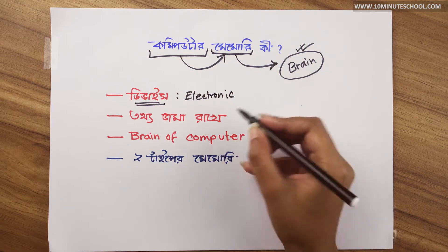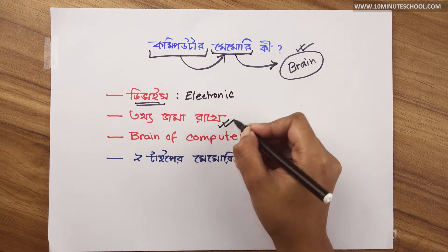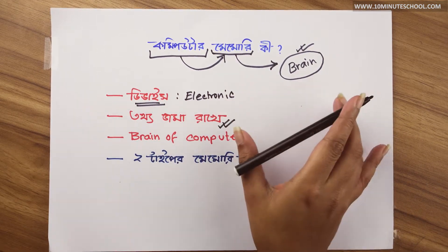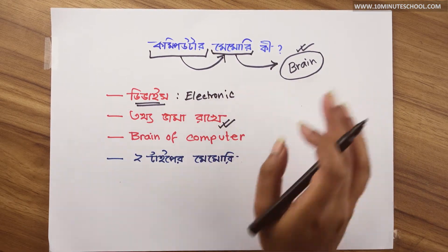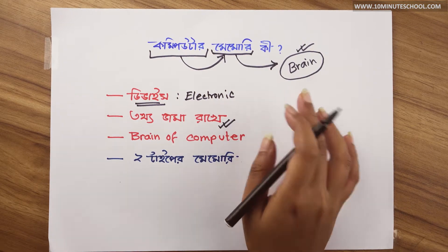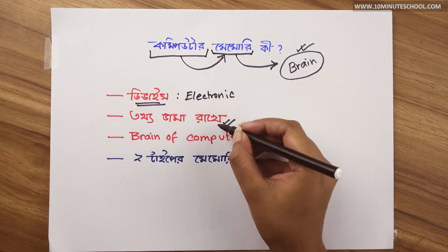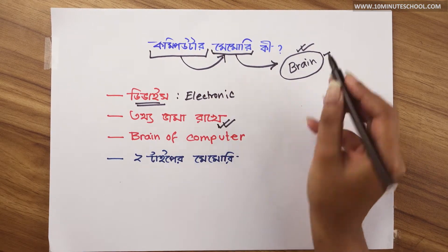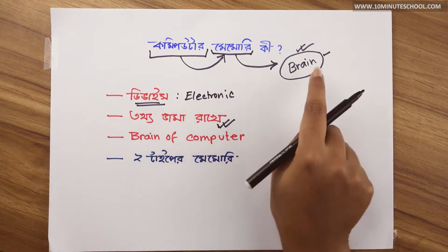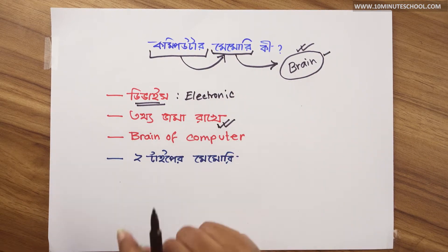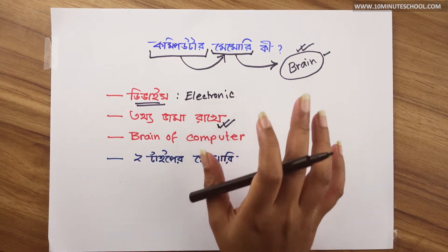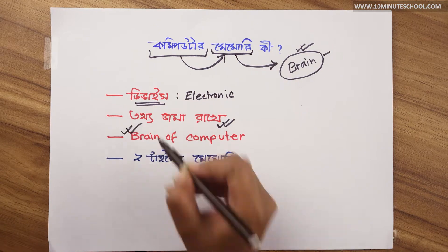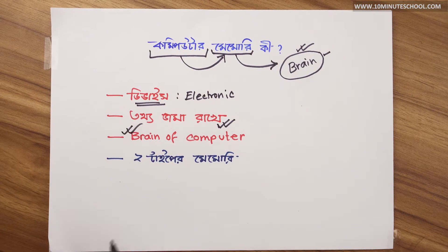What do you think about an electronic device? The electronic device is very stored. You can use the memory of the computer. When you do this, you can use the brain of the computer. This is the brain of the computer.